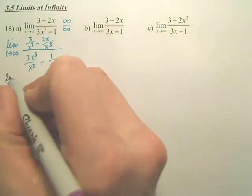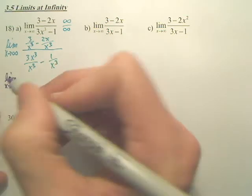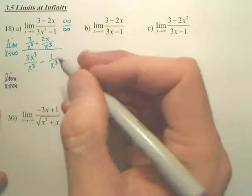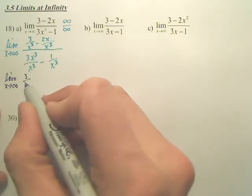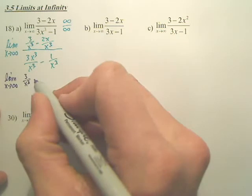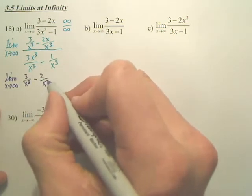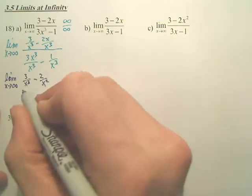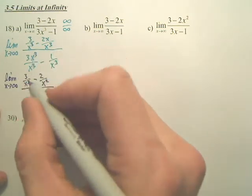We now have the limit as x approaches infinity of this. What does this one become? 2 over x squared. And this one — doesn't that become 3? Because these cancel.